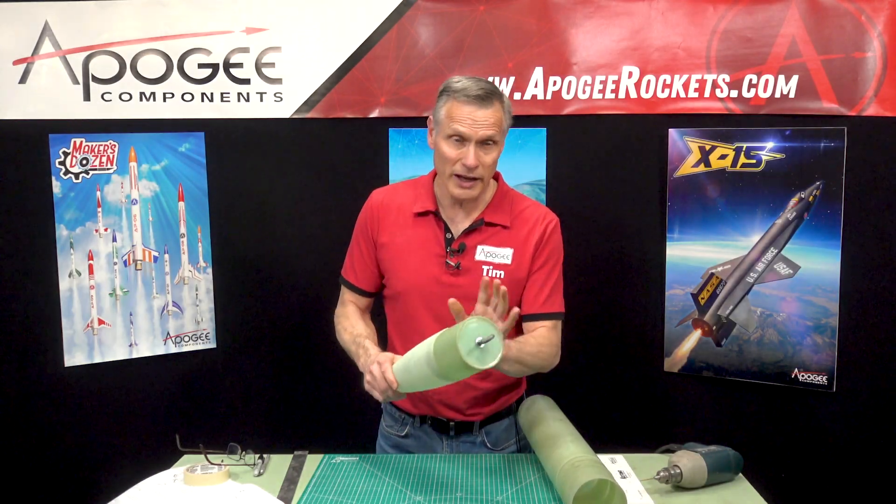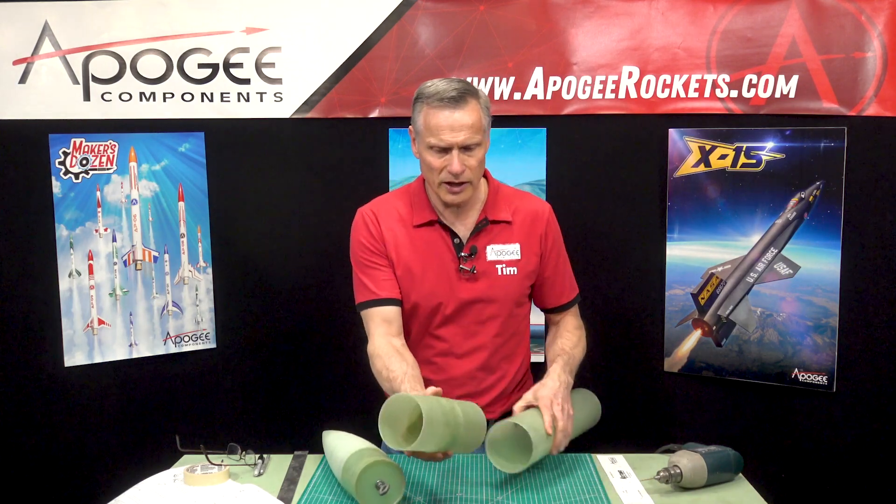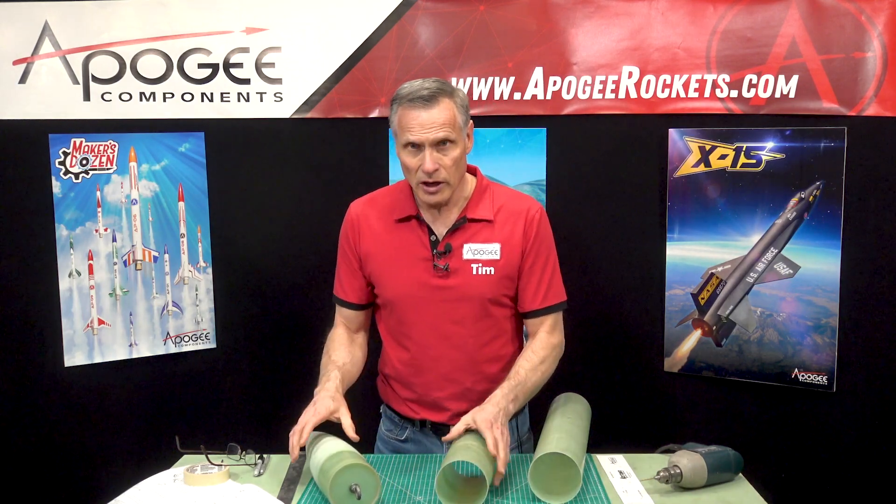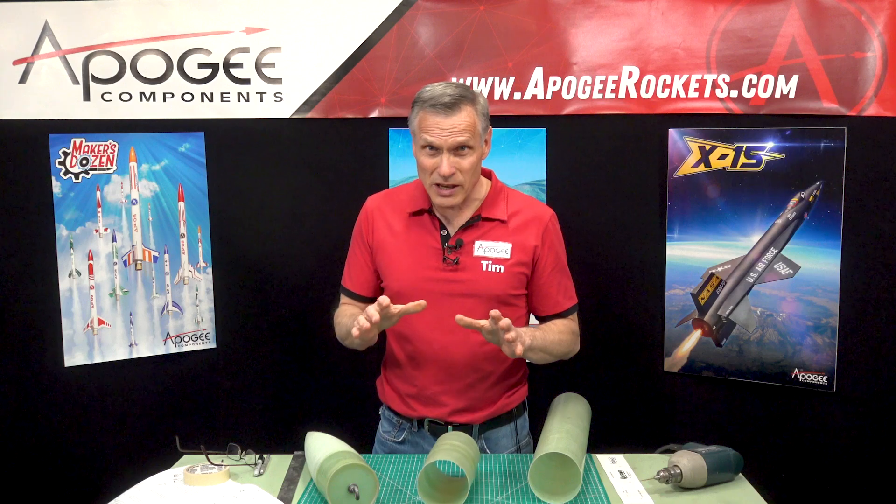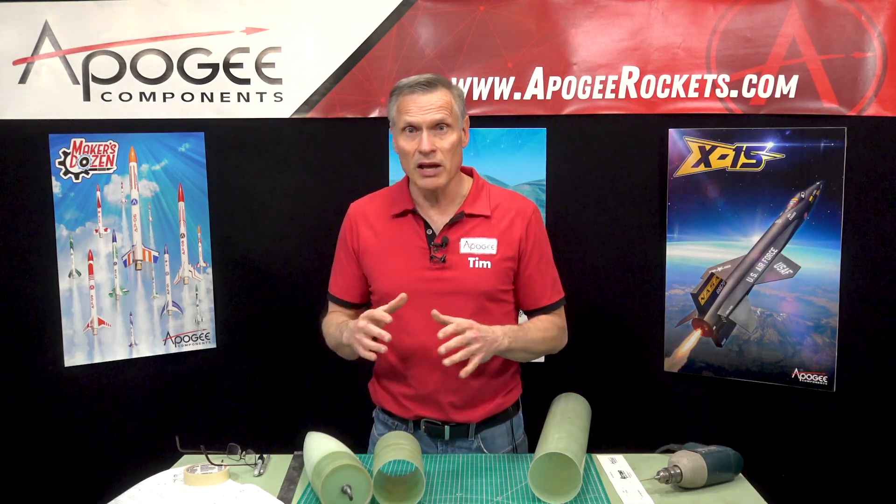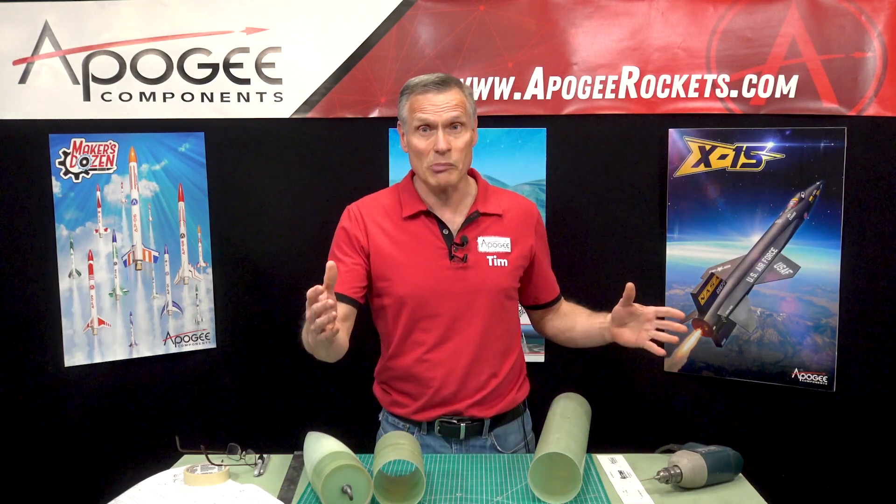All the epoxy is dry on the nose cone and on the switch band here. The next step in the instructions would be to start assembling the ebay, but I want to paint the rocket before I put all the internal stuff in. We're pretty much done with putting epoxy on the rocket. So at this point I could really start painting,